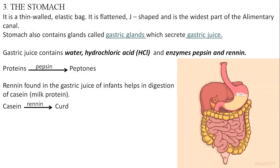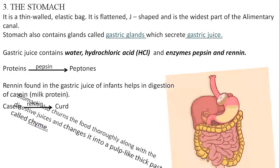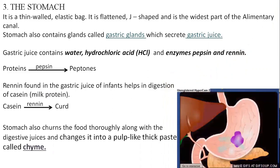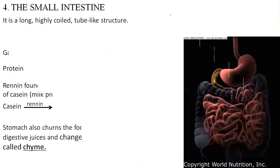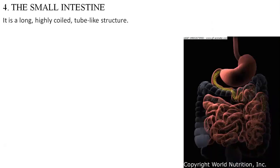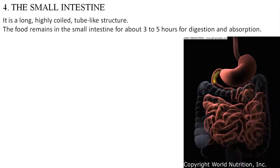The stomach churns the food thoroughly along with the digestive juices and changes it into a pulp-like thick paste called chyme, and the chyme moves into the first part of the small intestine. The small intestine is a long, highly coiled tube-like structure, about 7 to 7.5 meters in length, and food remains in the small intestine for about three to five hours for digestion and absorption.